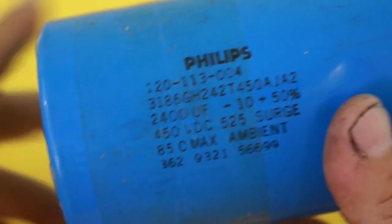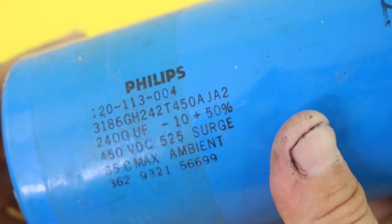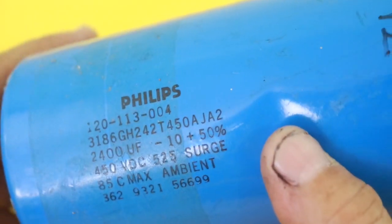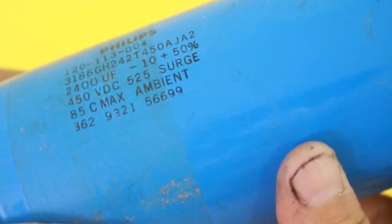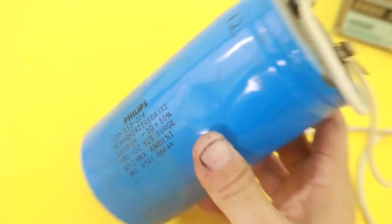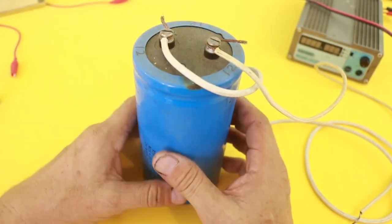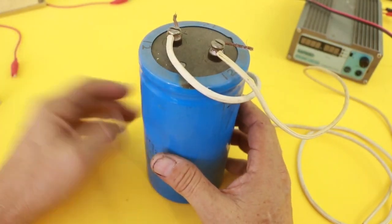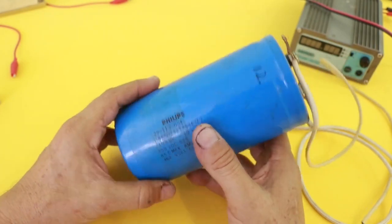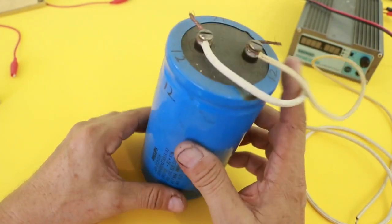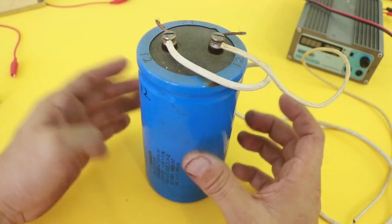This capacitor is 2400 microfarads at 450 volts. So using 9 of these capacitors, I can make a bank of around 1000 volts in order to make different kinds of high voltage experiments and use the tyristor.